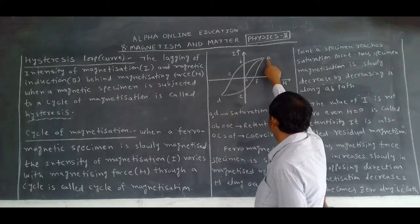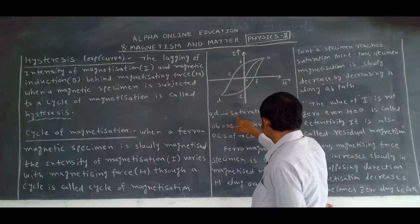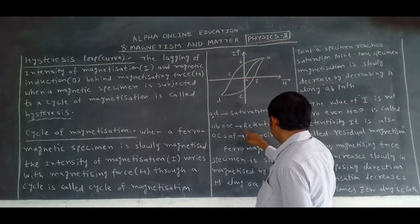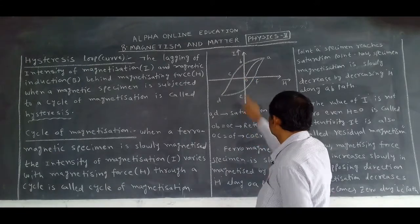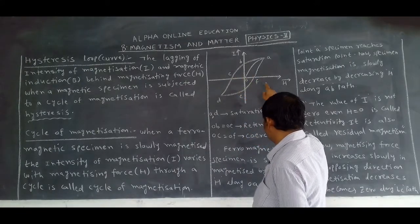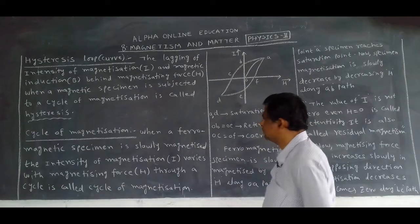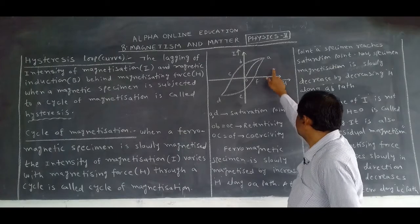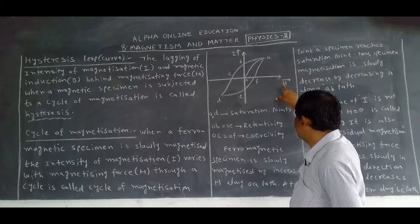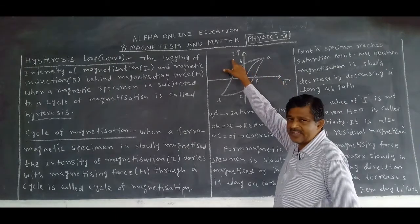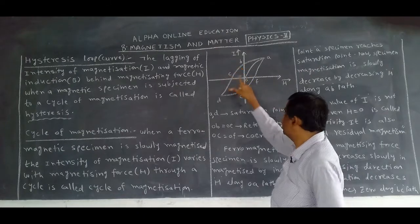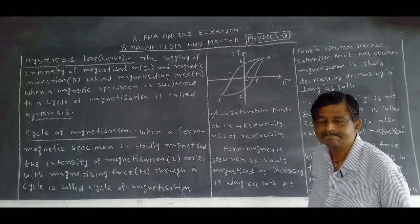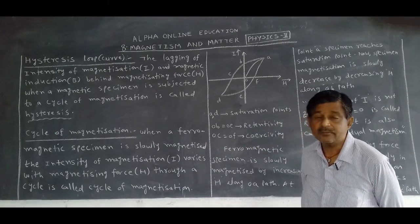In this graph, A and D are saturation points. OB and OE are called retentivity. OC and OF are called coercivity. In the examination, draw this graph with H along the x-axis and I along the y-axis. After drawing the graph, you must mention these points - this carries one mark.